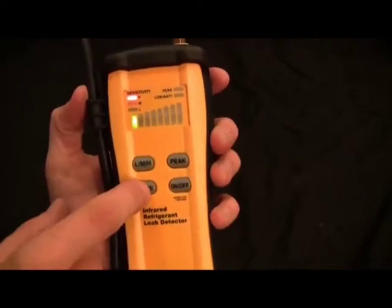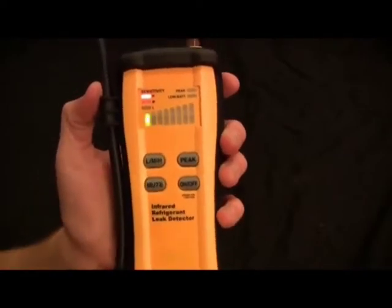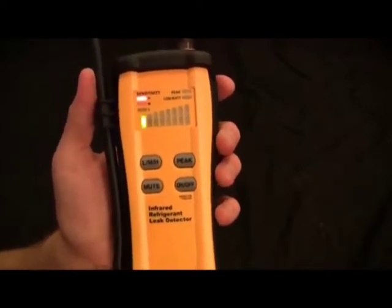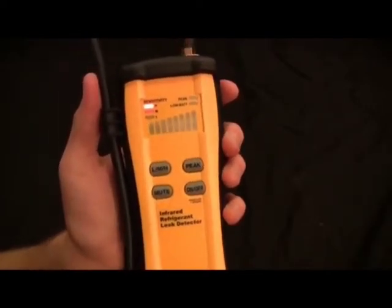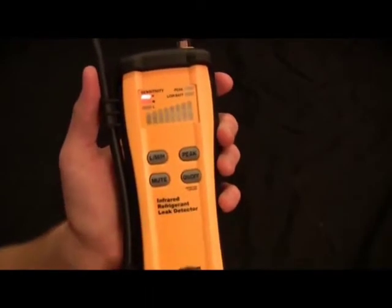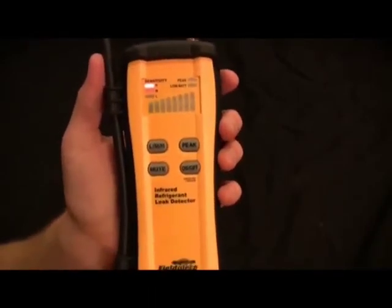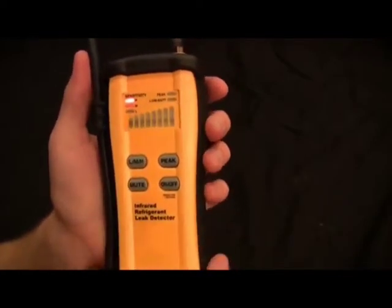So what we're going to do now is actually sense some leaks. I'm going to go ahead and unmute it. Now the first leak we're going to sense is our big leak, because it's only 0.31 ounces per year leak rate. So it's still a very small amount of refrigerant leaking out of this bottle. And this is our 134A right now. Let's go ahead and show you how it works.